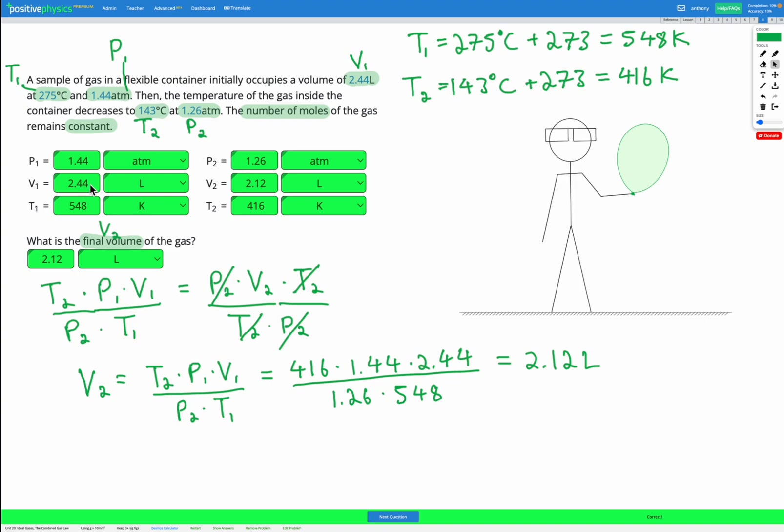So in that case, your V1 and your V2 will have the same number. You can still use this equation, but your V1 and your V2 would be the same in the equation.